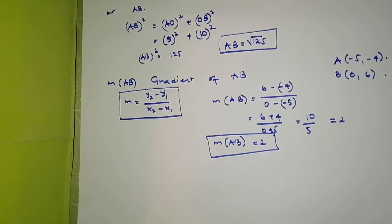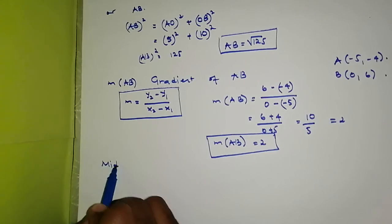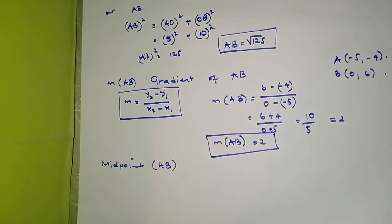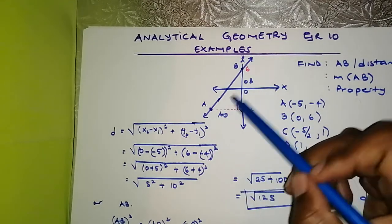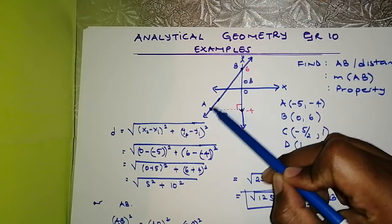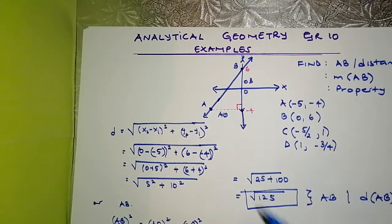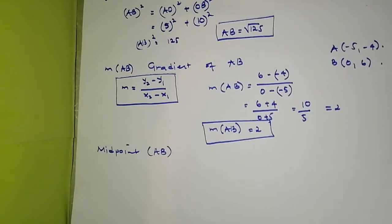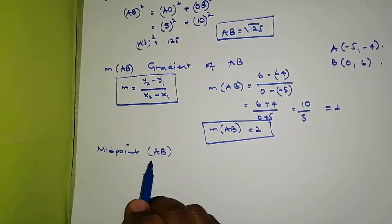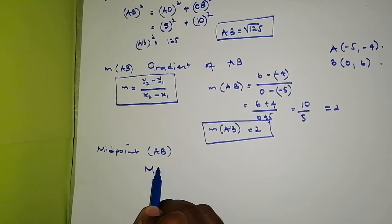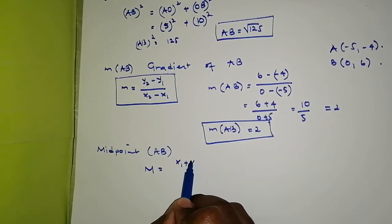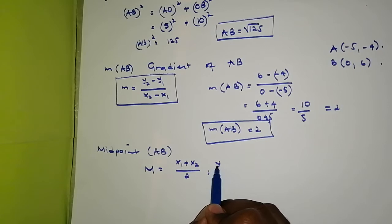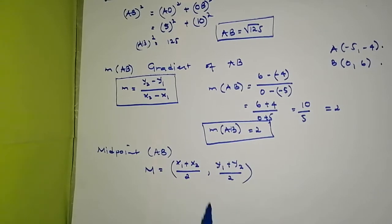Let's find the midpoint of AB. We want the exact coordinates of the midpoint. In order to find a midpoint M between two points, M equals X1 plus X2 divided by 2 for the X coordinate, and Y1 plus Y2 divided by 2 for the Y coordinate.